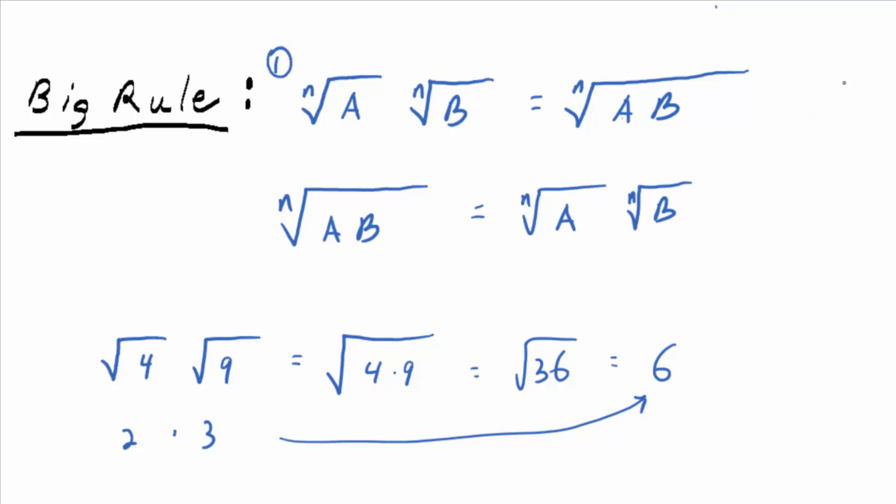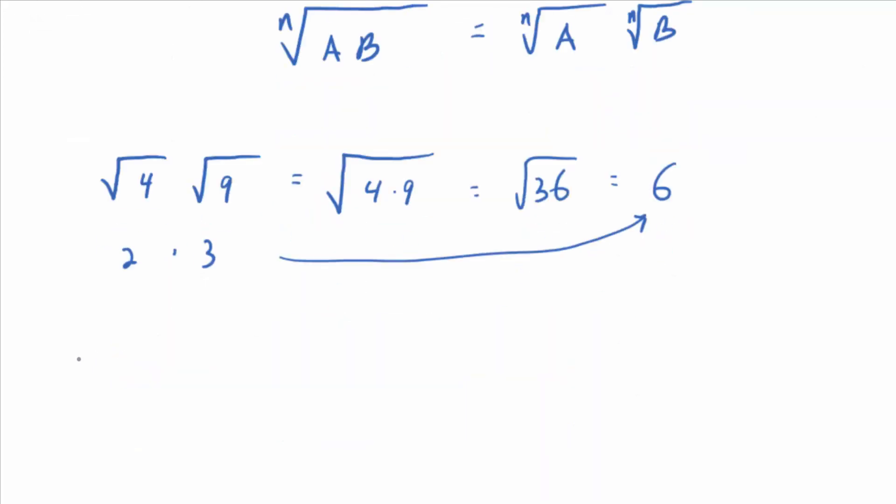So that's one of the big rules we're going to use today. Another big rule that we've already talked about is the fact that the nth root of a to the n is equal to the absolute value of a.